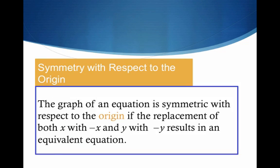One last type of symmetry we want to talk about is symmetry with the origin. We are symmetric to the origin if we have x-axis and y-axis symmetry. What that means is if we replace x with negative x and y with negative y, we get an equivalent equation.